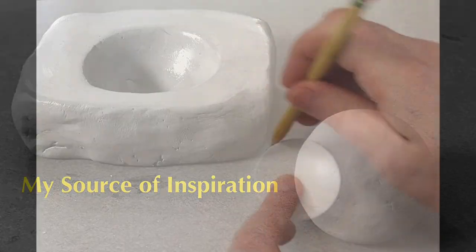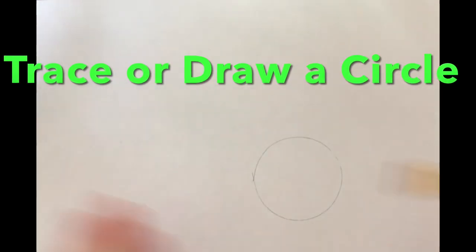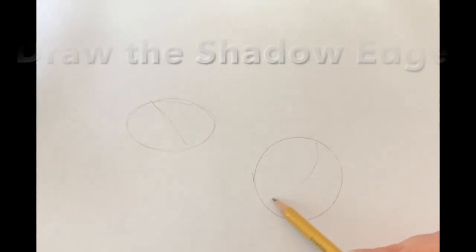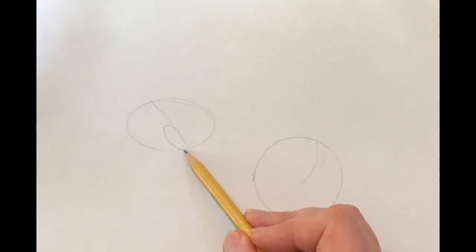So this is my source and you can follow along too. You can draw a circle, trace it, and then draw an oval. I'm showing you where the shadow edge is going to be.